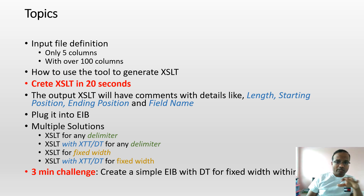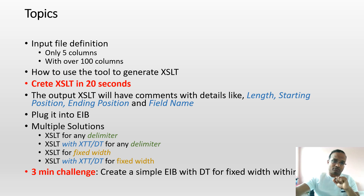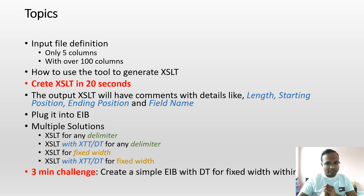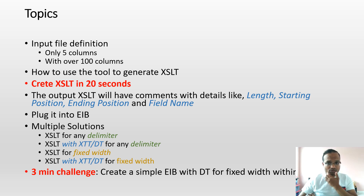I also want to show the multiple options I've created within the tool. There are four different options: one is delimited for direct use in EIB, one is delimited for document transformation, one is fixed width for direct XSLT use, and one is fixed width for document transformation with XDT. Then there's the three-minute challenge where I'll create an EIB, plug it into an integration, create a business process, and run it — all within three minutes.